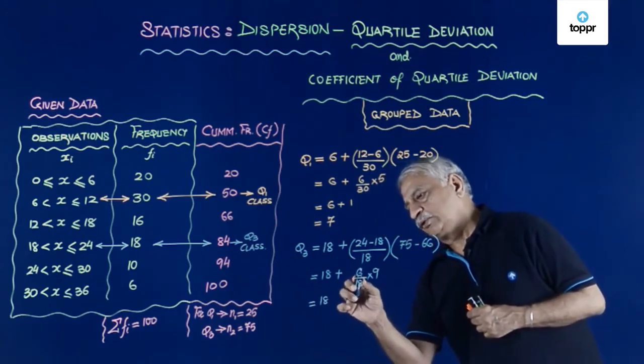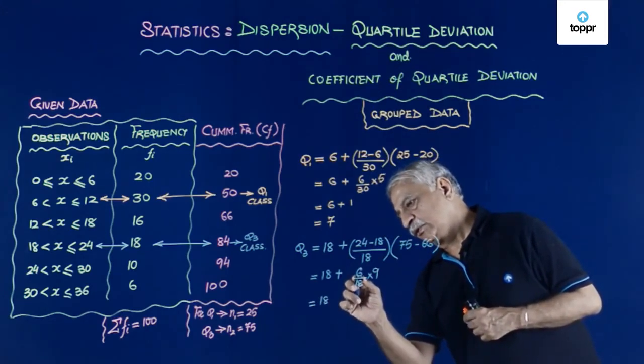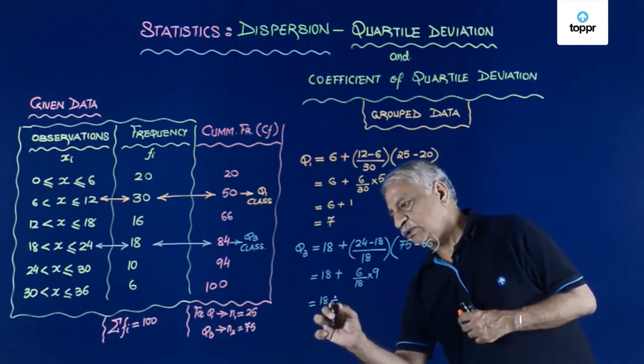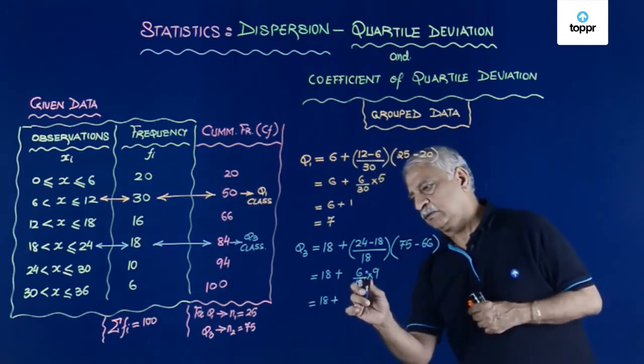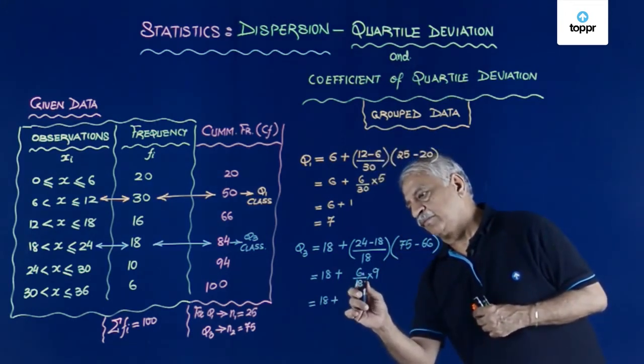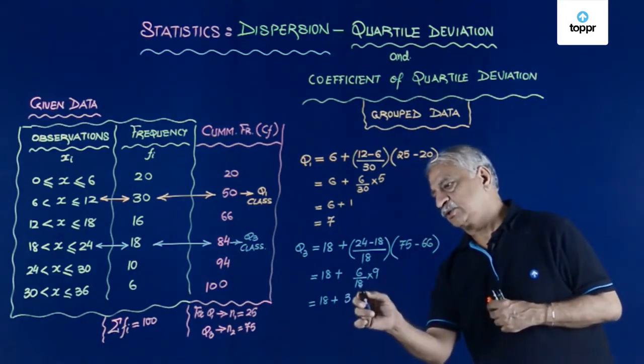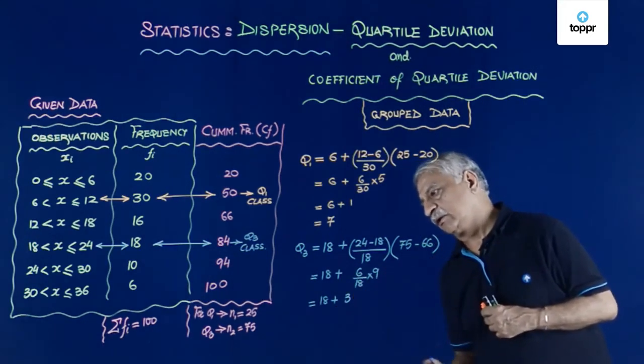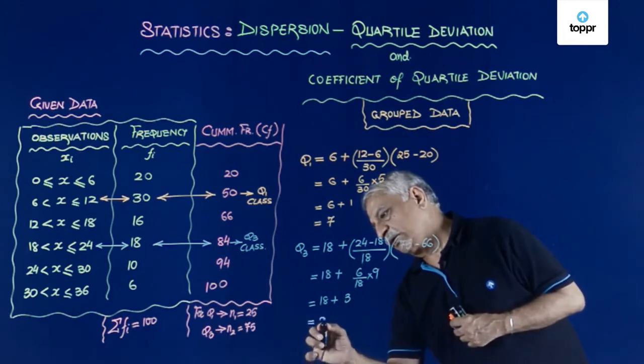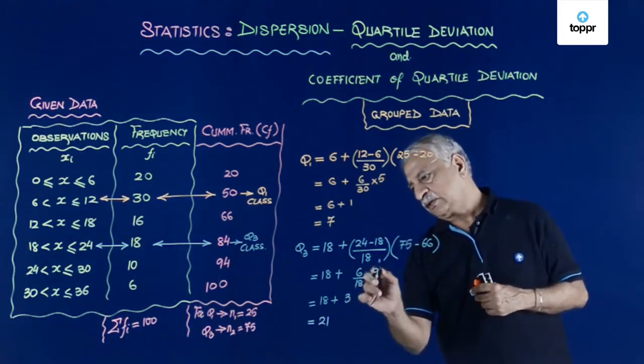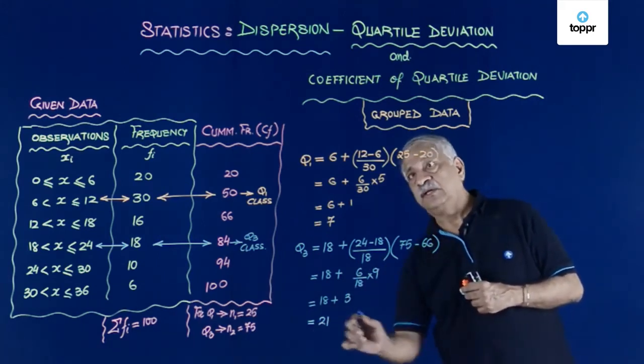So this is equal to 21. This gives me 18 plus 2 upon 3, which gives me plus 3. This goes 2 and 3, so this is equal to 21. From this I get quartile deviation.